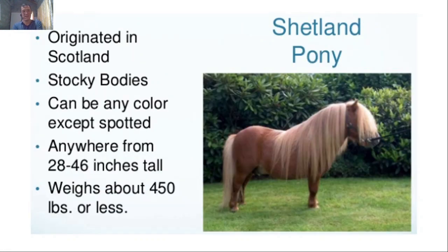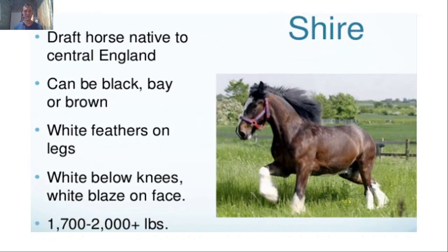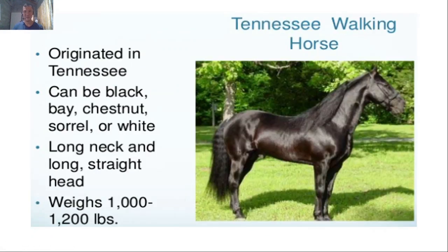The Shetland Pony from Scotland has a stocky body — short but extremely muscular. It can be any color except spotted, stands 28 to 46 inches tall, and weighs about 400 pounds or less. The Shire is a draft horse native to Central England, used for farming. It can be black, bay, or brown with white feathers on the legs and white below the knees, plus a white blaze on the face. It weighs around 1,700 to 2,000-plus pounds.